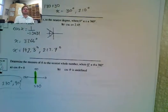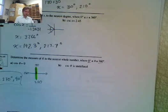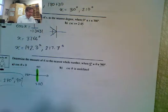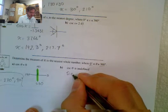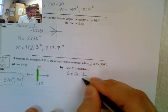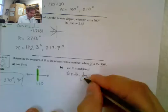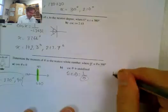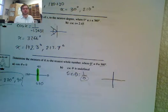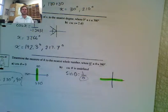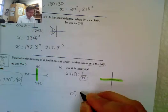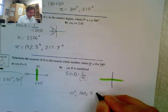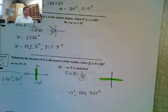Now let's look at when cosecant is undefined. Cosecant is 1 over sine, so for it to be undefined, sine of theta must equal 0, because we can't divide by 0. Sine equals 0 when we're on the x-axis — that's 0 degrees, 180 degrees, or 360 degrees. Those are my three answers.